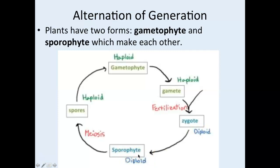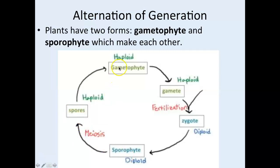The sporophyte undergoes meiosis to make spores, which are haploid. When spores are liberated into the world, they land somewhere and grow into a gametophyte — haploid because the spore was haploid. Gametophytes make gametes and the whole cycle begins again. Gametophytes make gametes, sporophytes make spores. The spore is haploid, and meiosis takes the sporophyte from 2n to n.